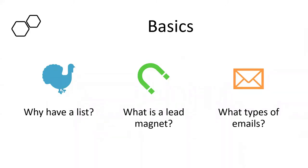So let's talk about the basics. Why have a list in the first place? It's kind of a chicken and egg scenario. You need to have a list in order to send people something, but in order to send people something, you need to have a list. What is a lead magnet? A lead magnet is a gift or something of value. And then finally, what types of emails work best with what type of person? One of the keys to having high email open rates is to send the right message to the right person at the right time.